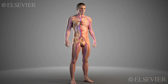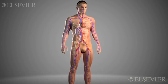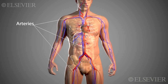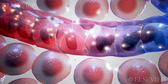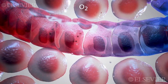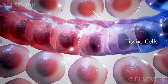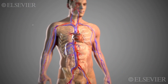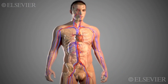There are more than 60,000 miles of blood vessels in the human body. These include arteries, which carry blood away from the heart; capillaries, which are the site of oxygen, carbon dioxide, nutrient and waste exchange between the blood and the tissue cells; and veins, which carry blood back toward the heart.